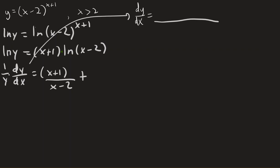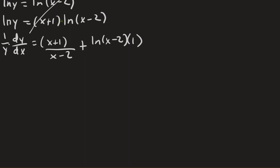And then switch the order. So now don't take the derivative of the second part, but take the derivative of the first part. And we get that 1 over y times dy dx is equal to x plus 1 over x minus 2 plus the natural log of x minus 2.